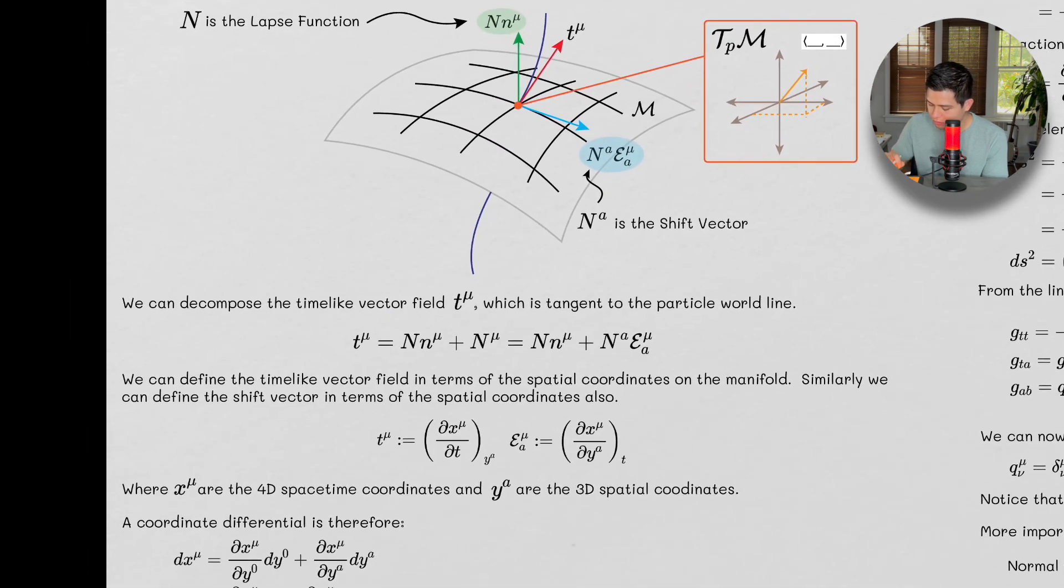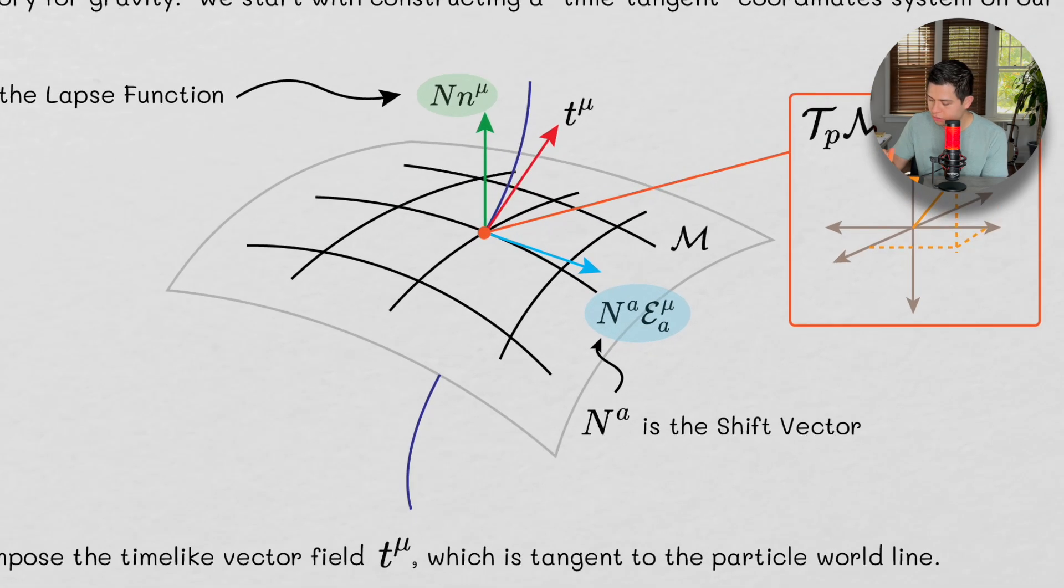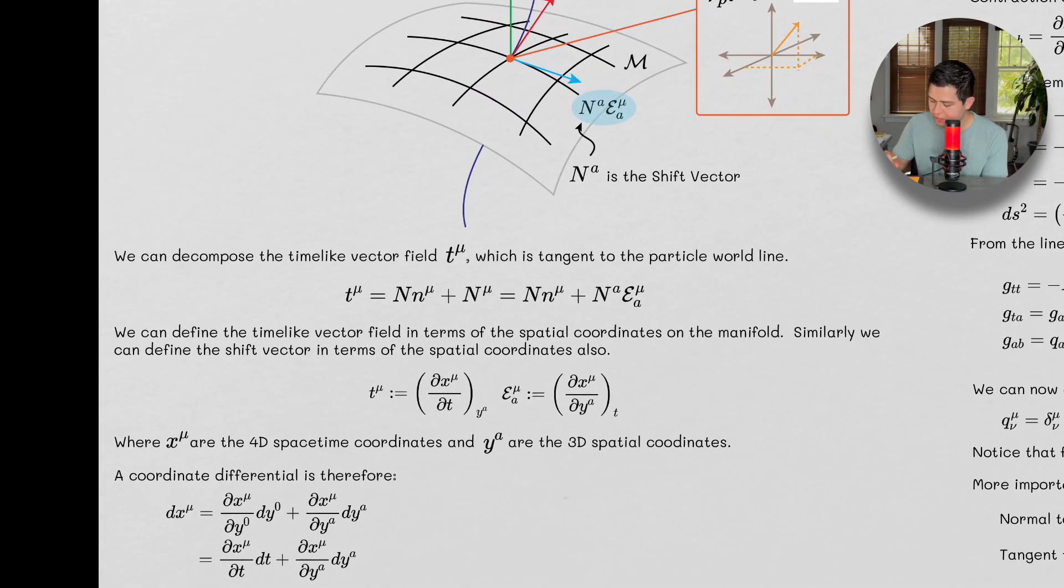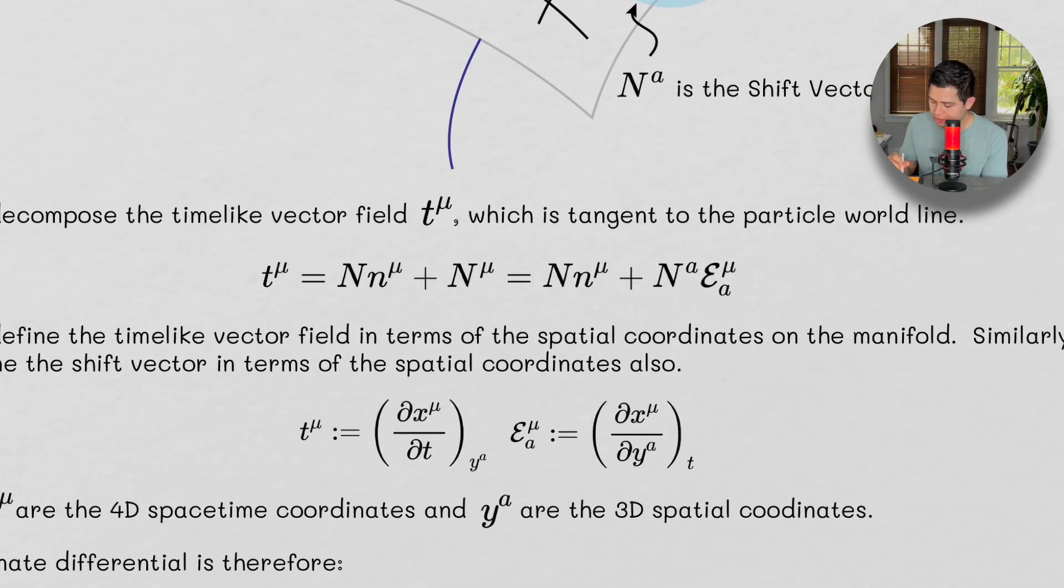So we can decompose the time-like vector T^μ, which is tangent to the particle world line, in terms of these two guys. So T^μ we can say is n·n^μ plus N^μ. Okay, so big n, little n mu, that's the lapse function.